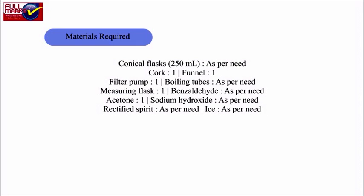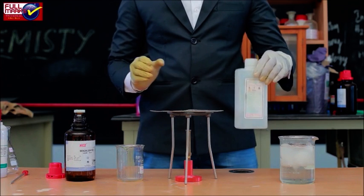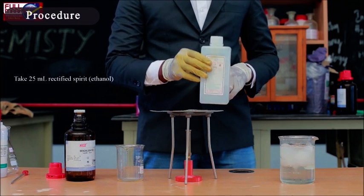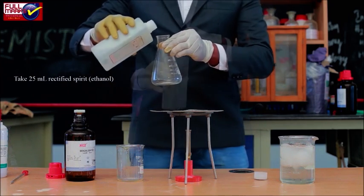Procedure: Take 25 ml rectified spirit, that is ethanol, in a conical flask.